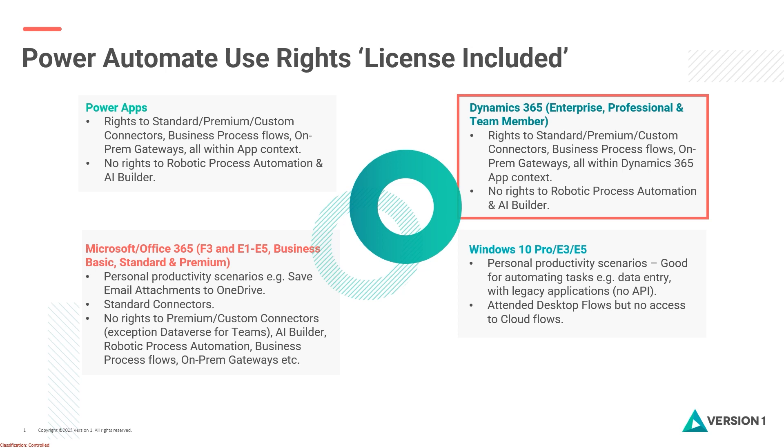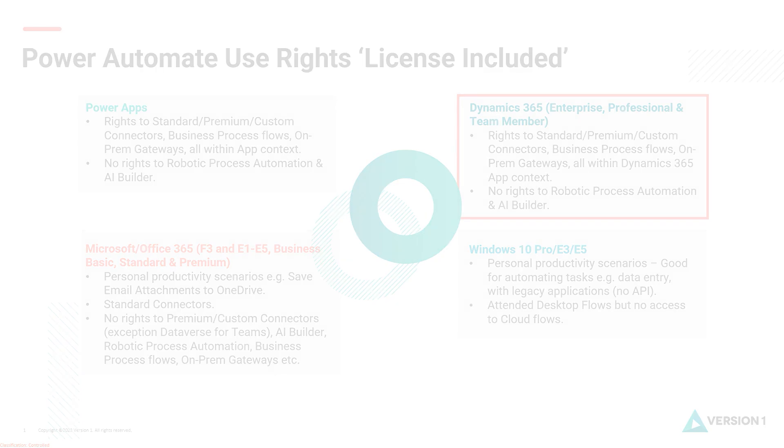Similarly, with Dynamics 365, within the context of the Dynamics 365 app you get rights to use standard, premium, and some custom connectors, business process flows, and on-premises gateways. Again, there are no rights to use robotic process automation or AI Builder. These two Microsoft apps give you limited use rights within the app itself.